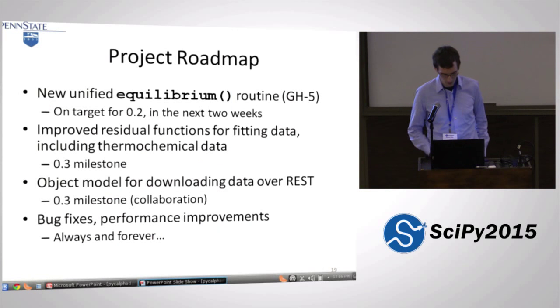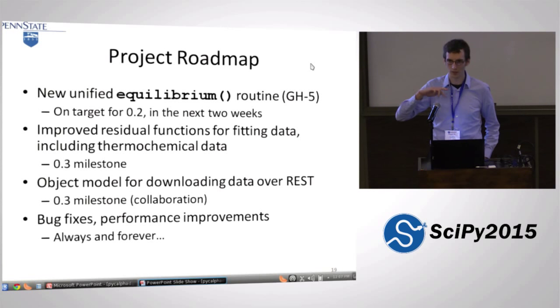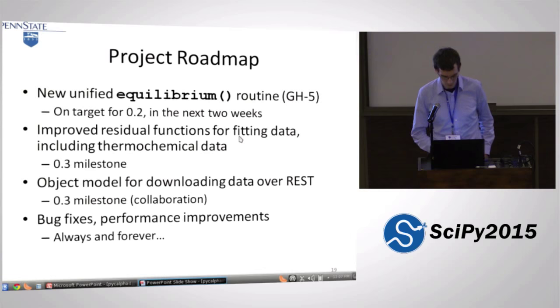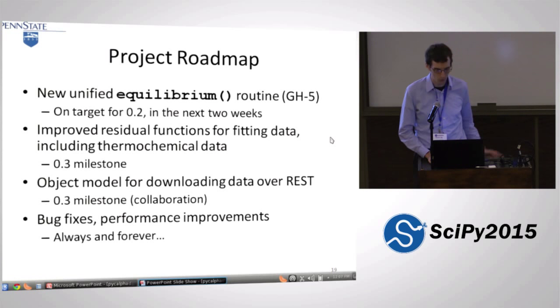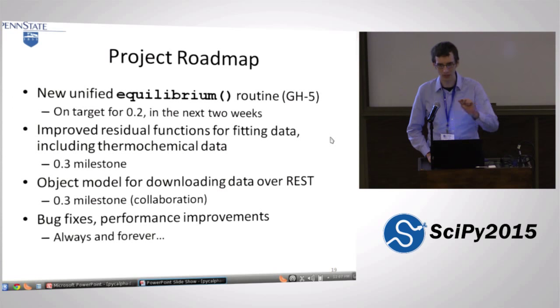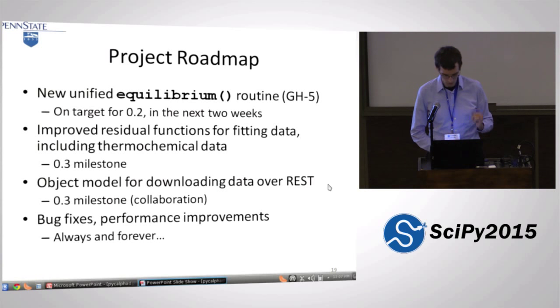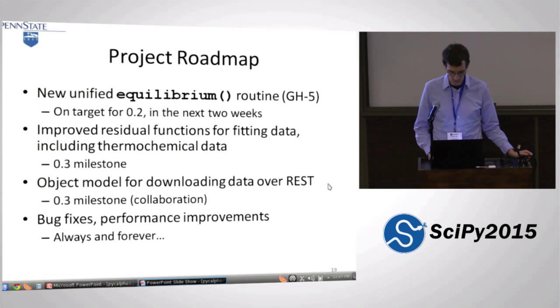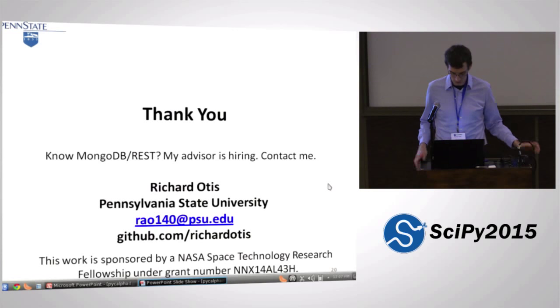On the roadmap, I'm developing a new unified equilibrium routine that will handle all the plotting, point equilibrium, mapping, and everything — that ought to get done in the next two weeks. Improved residual functions are on track for point three, probably before the year's out. Also REST-based interfaces, and of course ever more bug fixes and performance improvements. Thank you — I appreciate your attention. Also, my advisor's startup is hiring; if you're interested in this kind of work and know MongoDB or REST, you should reach out to me.